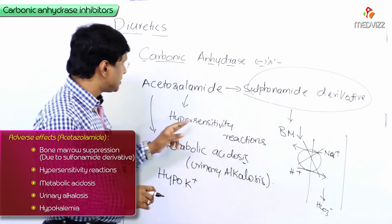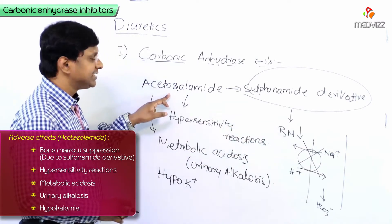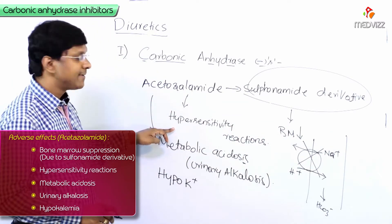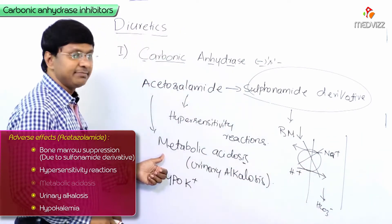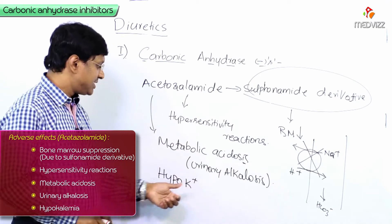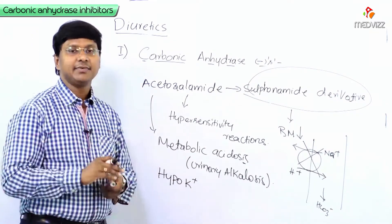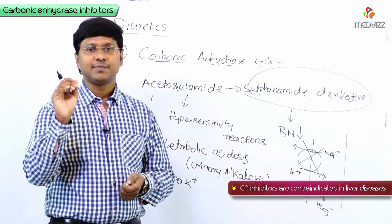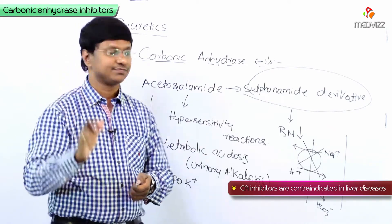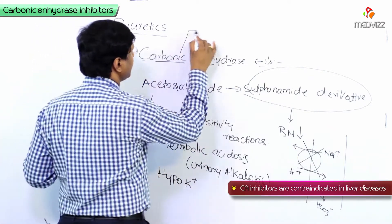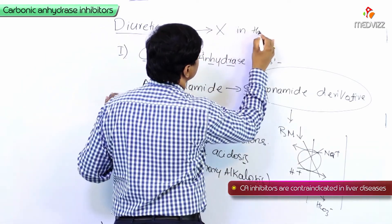So the adverse effects of acetazolamide include: bone marrow suppression (because it is a sulfonamide derivative), hypersensitivity reactions, metabolic acidosis with urinary alkalosis (due to inhibition of H+ ion secretion), and hypokalemia. Additionally, carbonic anhydrase inhibitors should not be used in the presence of liver disease.